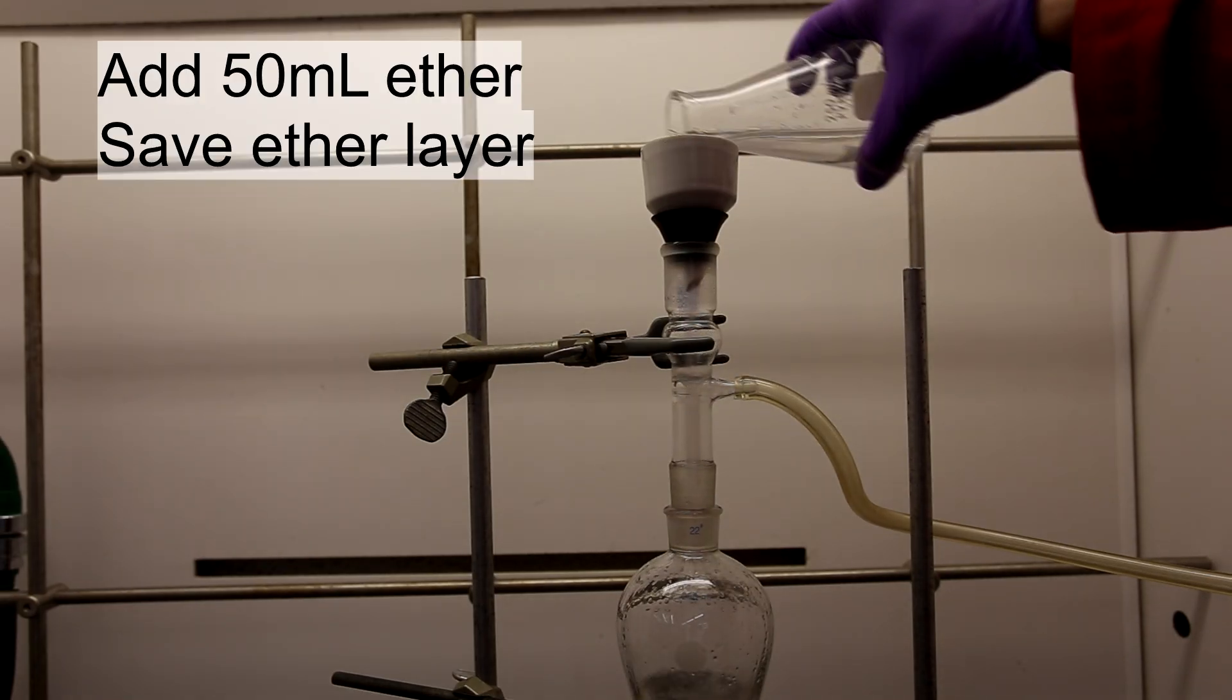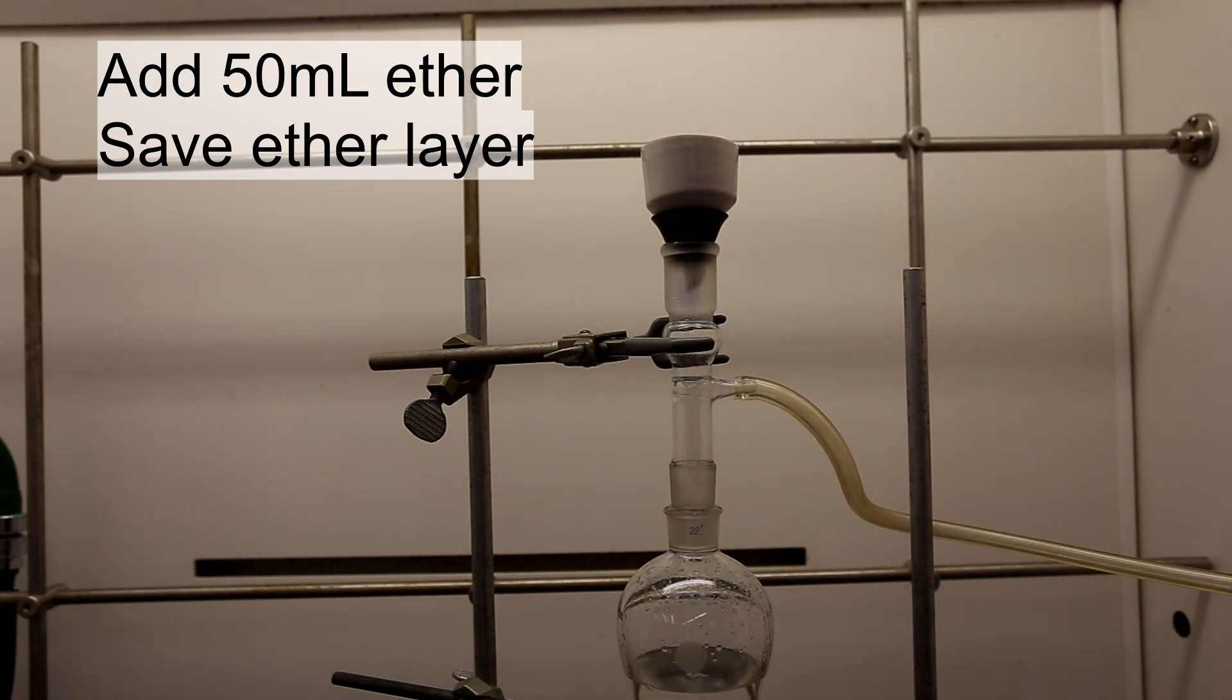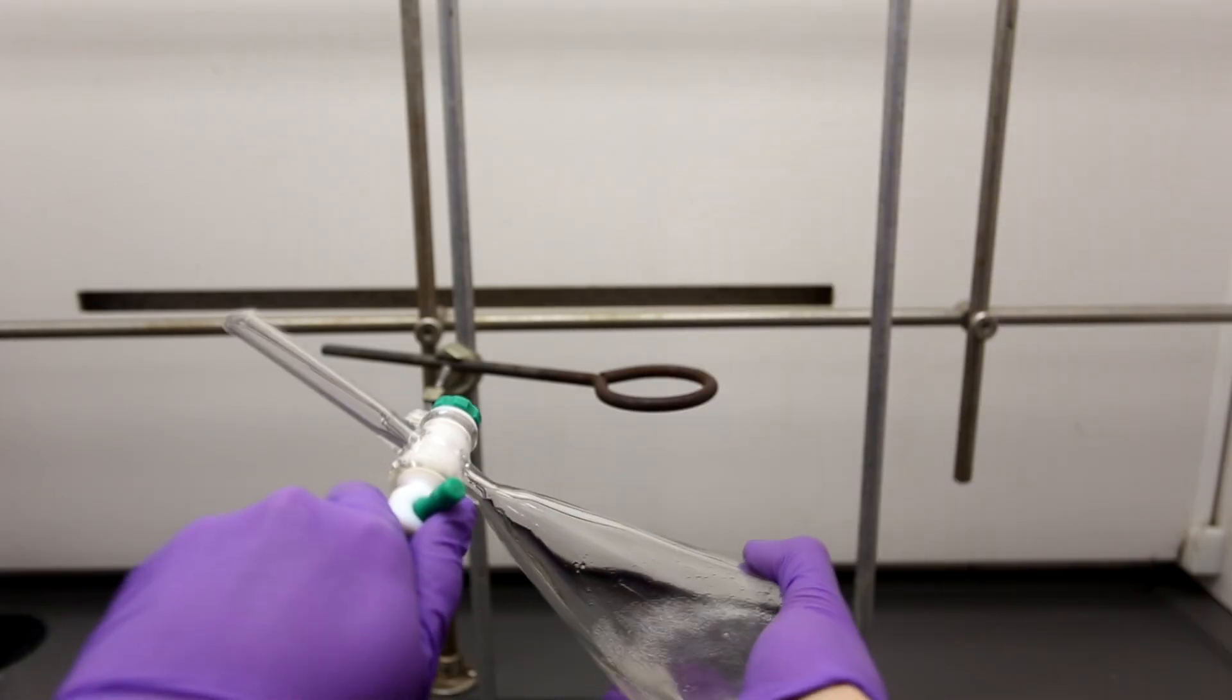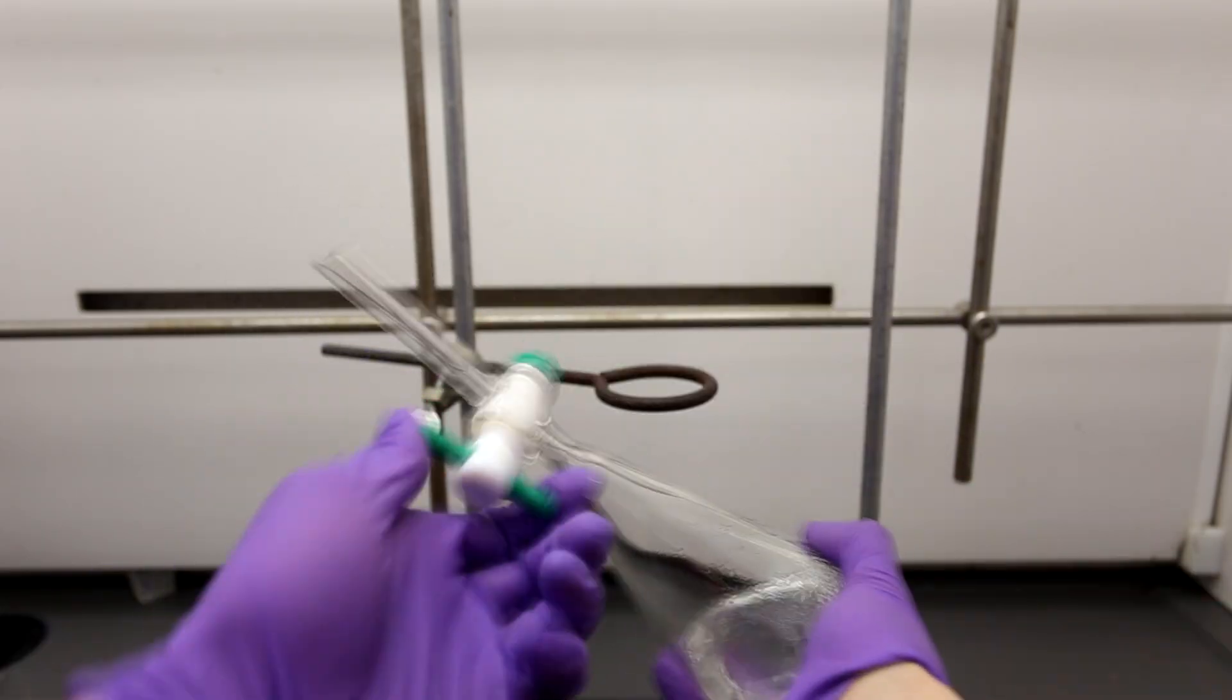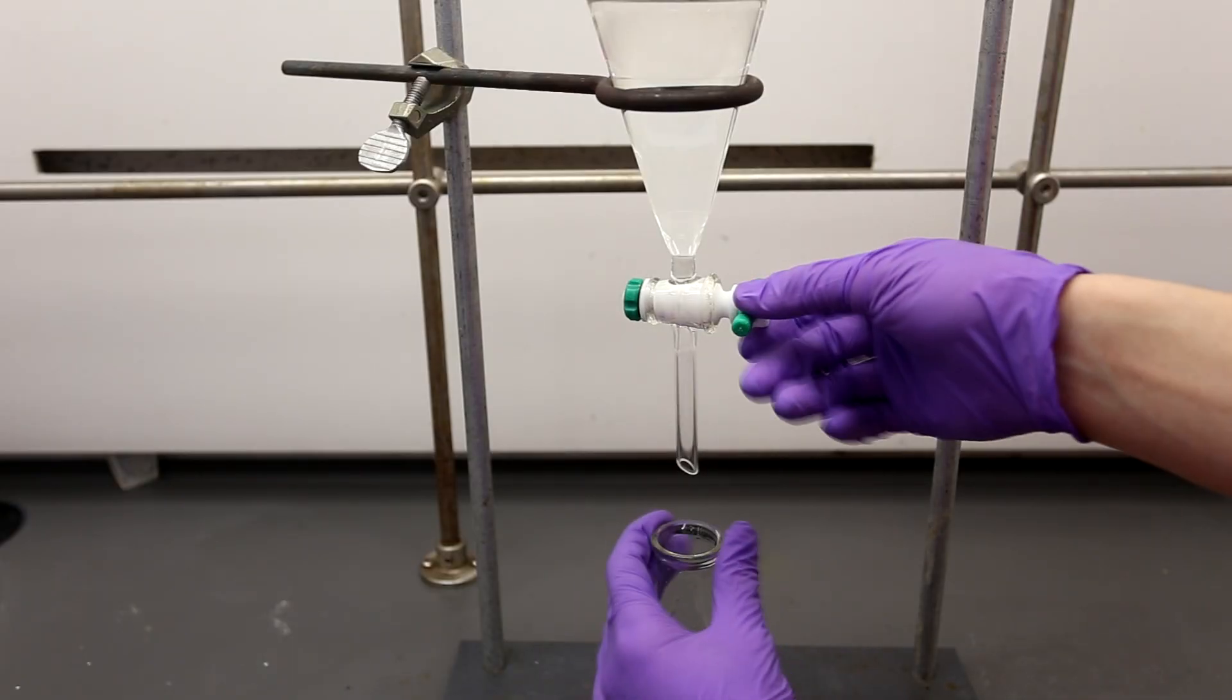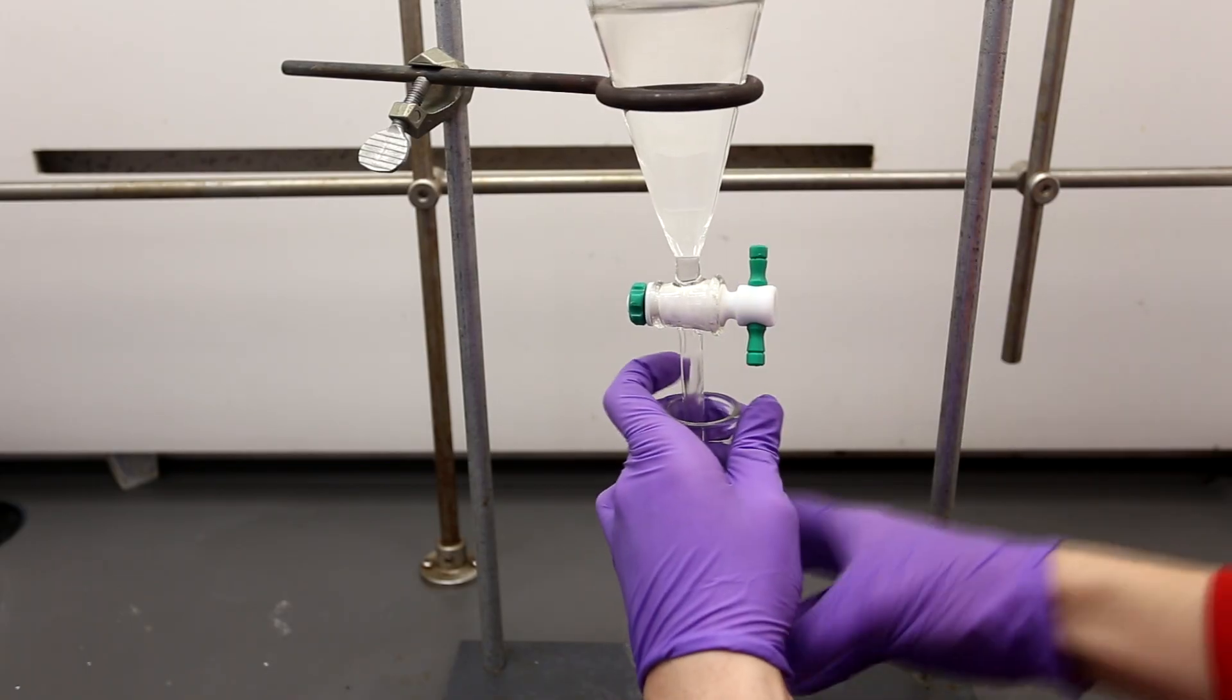The vacuum filtration apparatus was then washed with 50 milliliters of ether. The solution was mixed thoroughly with frequent venting. The lower aqueous layer was drained and discarded, and the ether layer was maintained.